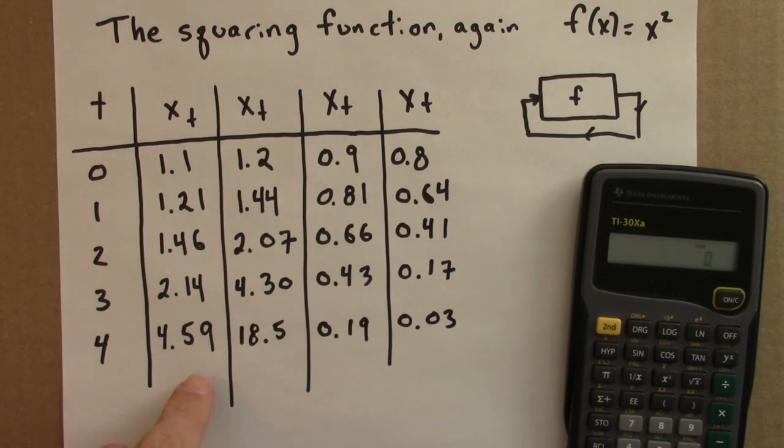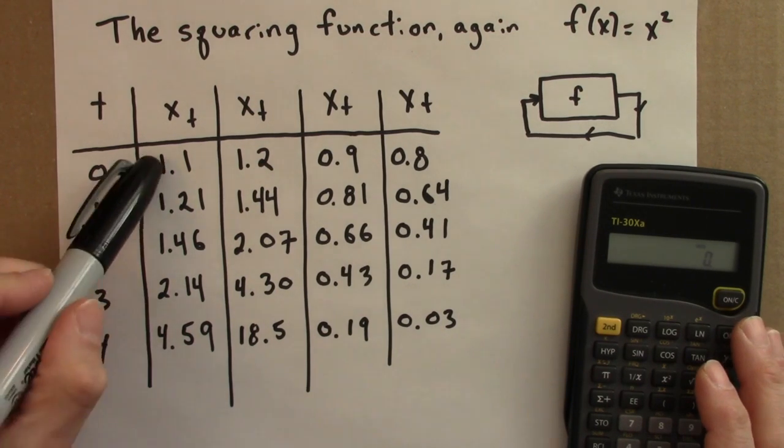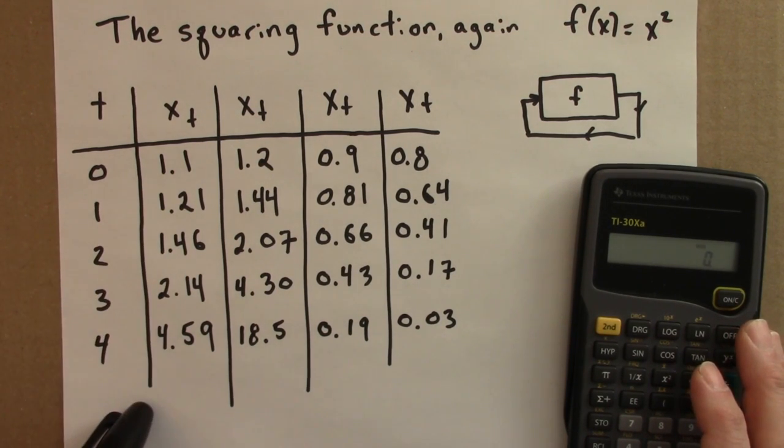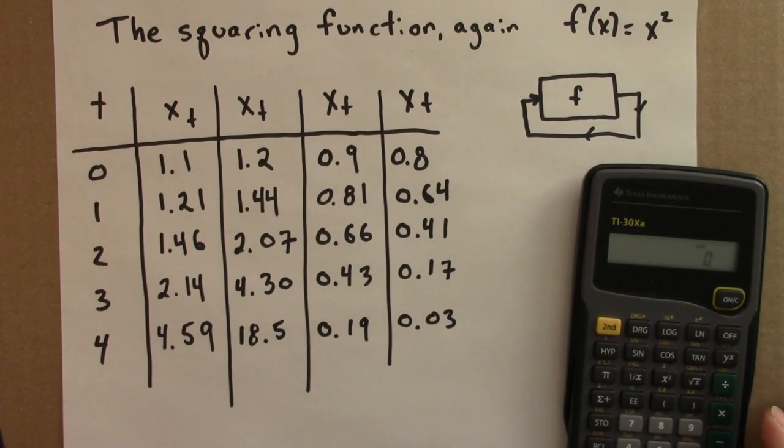So calculating the orbit, a particular orbit for a particular seed, is not too difficult. It just requires a little bit of calculator work. But it doesn't let us get a sense of the big picture. What does this function do? So we'll use some graphical techniques that will help us see this better and understand the function all at once.